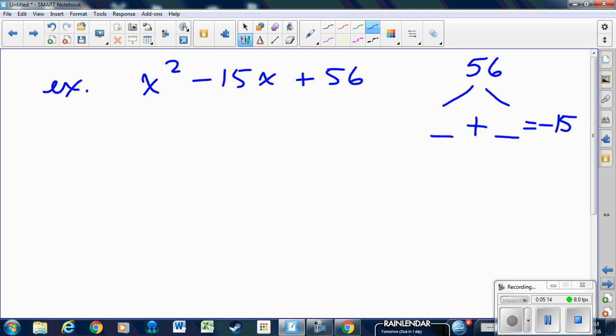The two factors that are going to work are 8 and 7. But because they have to add to -15, in this case both of them have to be negative, but that still works with the positive 56 because a negative times a negative equals a positive. So now I know that my answer has to be x-8 times x-7.